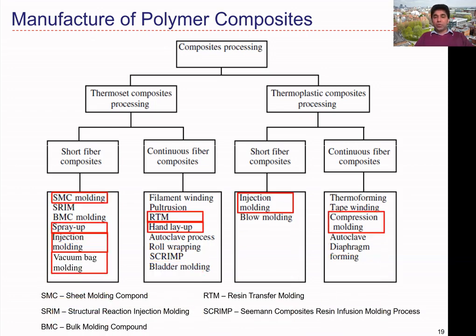The processes I'll discuss in this part of the lecture are: SMC (sheet molding compound), spray-up, injection molding, vacuum bag molding, resin transfer molding, and hand layup. Most of these processes relate to thermoset polymers — thermoset-based polymeric composites — while injection molding and compression molding can also relate to thermoplastic materials.